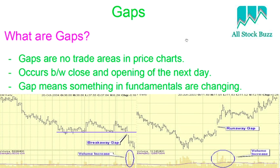Gaps are no-trade areas in price charts. They occur between the close of one day and the opening of the next day. These are generally common gaps and are usually filled by the same day or within one or two days. But some gaps are formed due to fundamental changes in the company — when the fundamental figures of a company change, there might be a significant gap in the price chart.